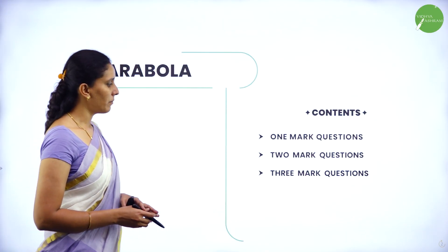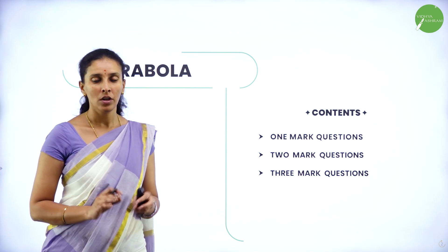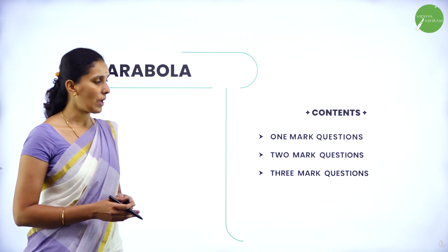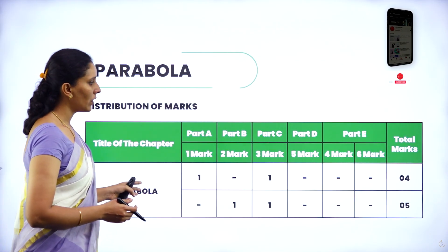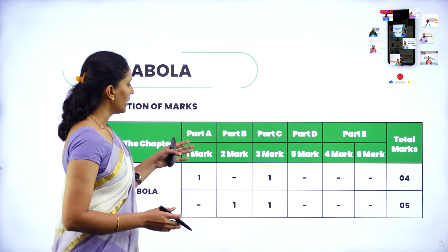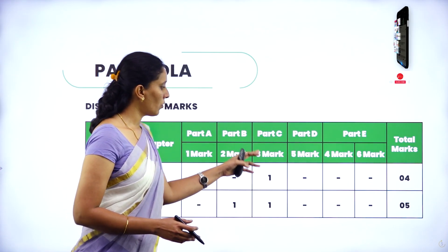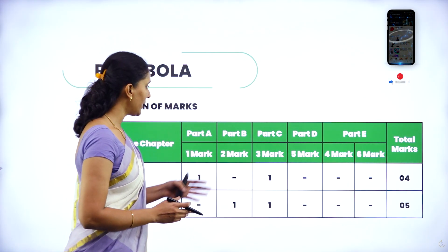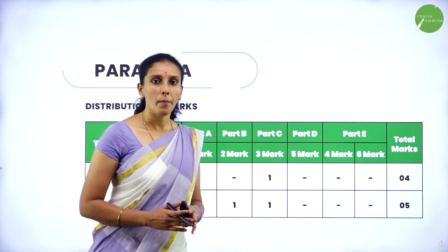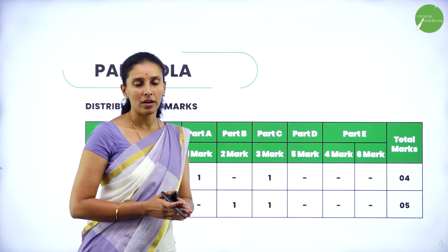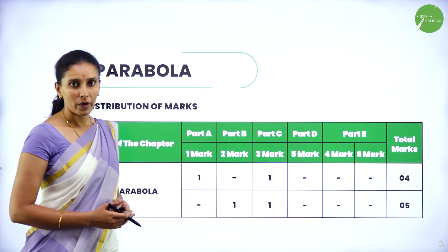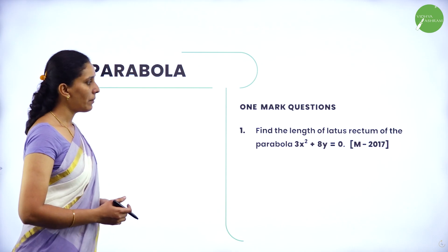So here we have one mark, two marks, and three marks questions. You can expect only one, two, or three mark questions from this chapter. So at maximum, you will get four to five marks from this chapter — either a one mark question, a three mark question, or one two-mark and one three-mark question.